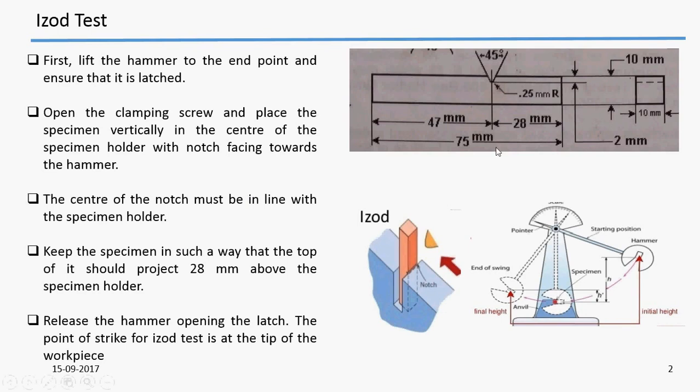We can release the hammer from this position so that it will hit and the sample will break. If the sample is not there, it will have a full swing, but as the specimen breaks, it absorbs some energy which is the indication of the fracture toughness of that particular material.